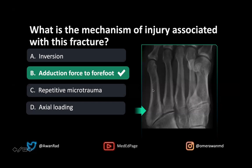A stress fracture, which happens along the diaphysis — right here along the middle of the metatarsal — is related to chronic repetitive microtrauma, often seen in runners and athletes, so C would be the answer there. A Jones fracture, which is what we're seeing here, is an adduction force to the forefoot when the ankle is in plantar flexion. Axial loading is not related to any of these three mechanisms.